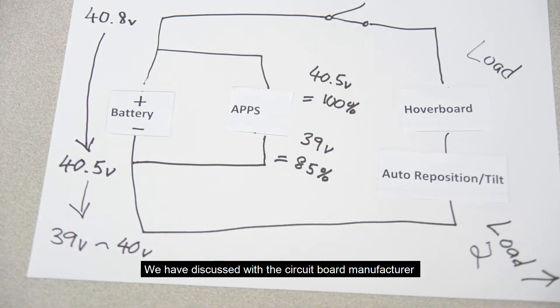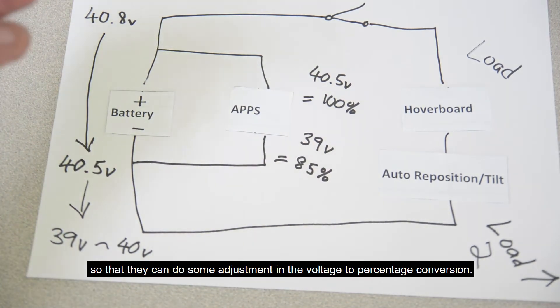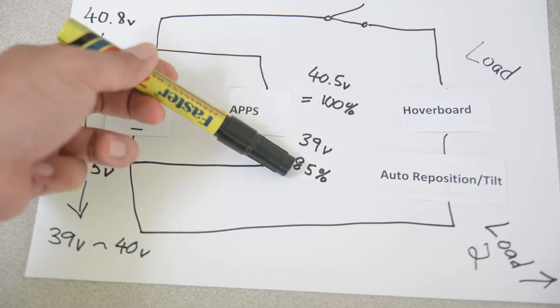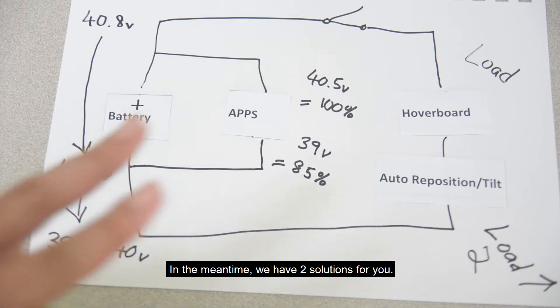We have discussed with the circuit board manufacturer so they can do some adjustment in the voltage to percentage conversion. In the meantime, we have two solutions for you.